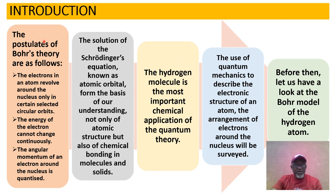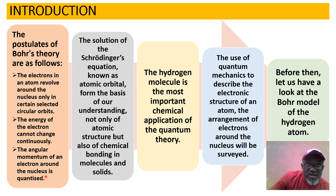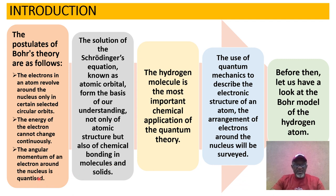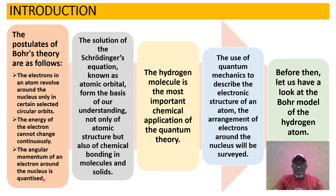Introduction. The postulates of Bohr's theory are as follows. One: the electrons in the atom revolve round the nucleus only in certain selected circular orbits. Two: the energy of the electron cannot change continuously. Three: the angular momentum of an electron around the nucleus is quantized. Remember, in quantum chemistry we're trying to migrate from classical mechanics to quantum mechanics. Classical mechanics predicts that there is continuous radiation of an electron — the electron is a charged body — so the electron will be losing energy continuously. But that is not so, and that's why quantum mechanics came in to explain the situation.